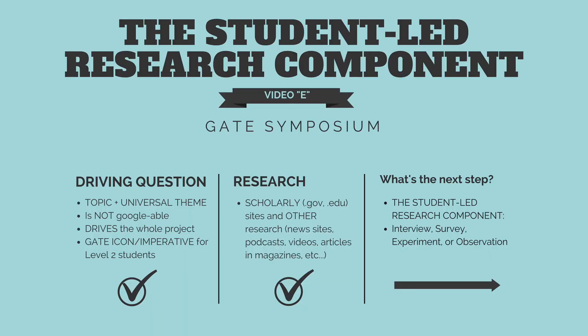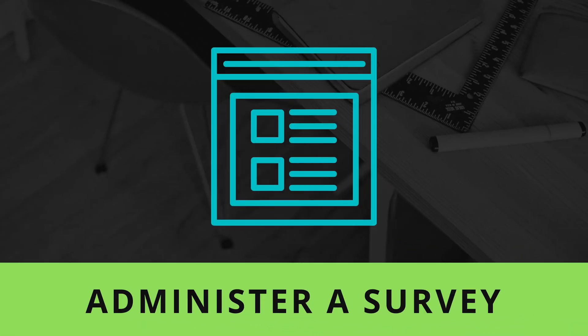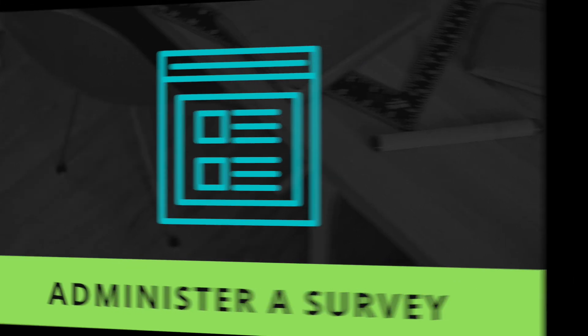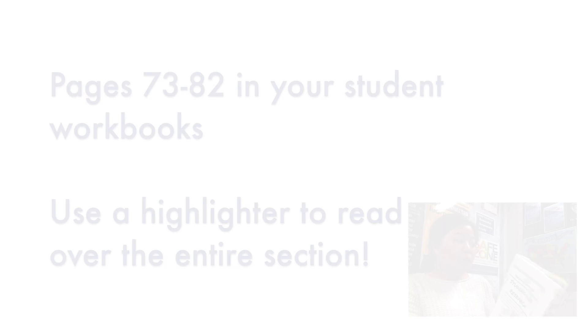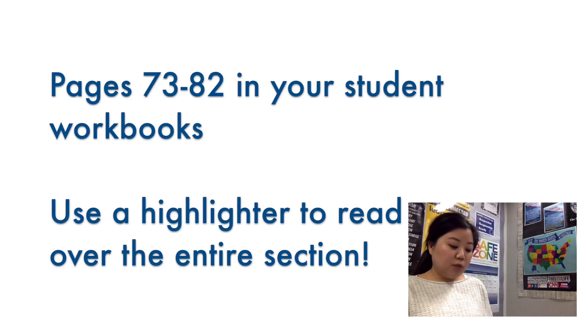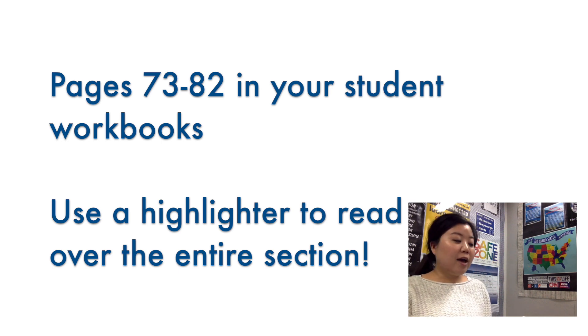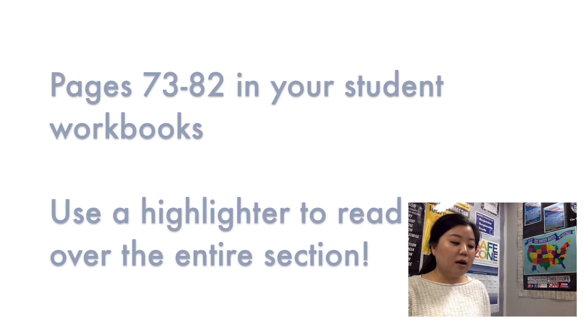You are only doing one of the following four choices: you can administer a survey, conduct an interview, make an observation, or do an experiment. Go ahead and make sure you read pages 73 through 82. These pages are going to be extremely helpful — they're going to go through every single important detail about all four of your choices for your SLR.